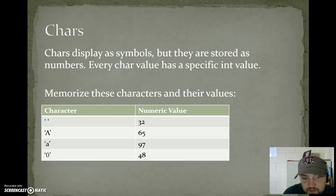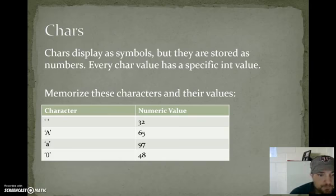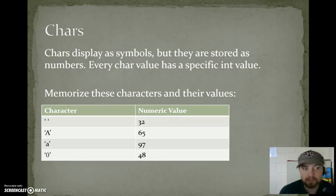Capital A is the numeric value, 65. B is 66. C is 67, so forth. Lowercase a is 97. Lowercase b is 98. Zero is 48. One is 49. By knowing these beginning locations, we can derive many other values. We can derive any lowercase letter, any uppercase letter, and any number.